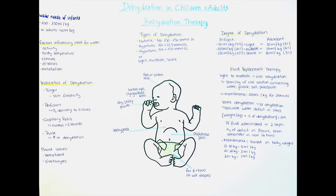We can also categorize dehydration by degree: light, moderate, and severe. In an infant, 50 mL per kilogram or 5% of body weight is light dehydration; 100 mL per kilogram or 10% is moderate; and 150 mL per kilogram or 15% is severe. In adolescents, it takes less proportional water loss: light is 30 mL per kilogram or around 3%; moderate is 50 mL per kilogram or around 6%; and 80 mL per kilogram or 9% is considered heavy dehydration.